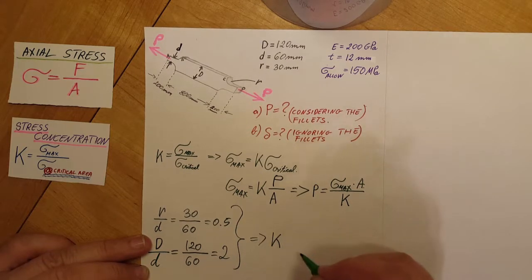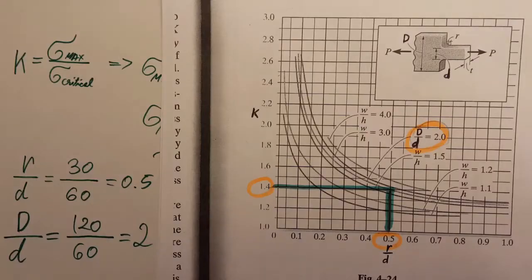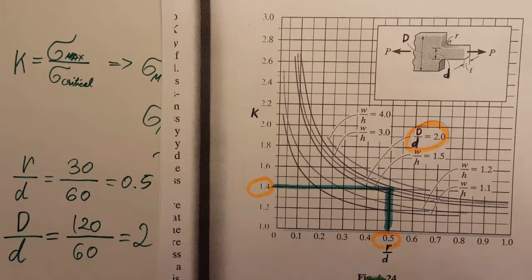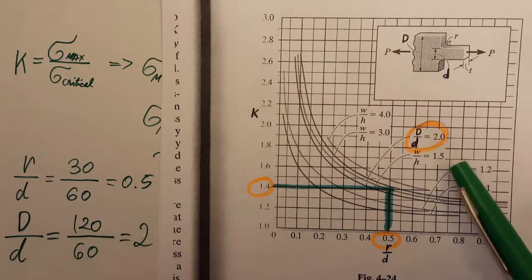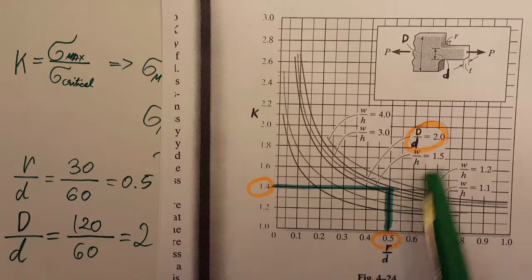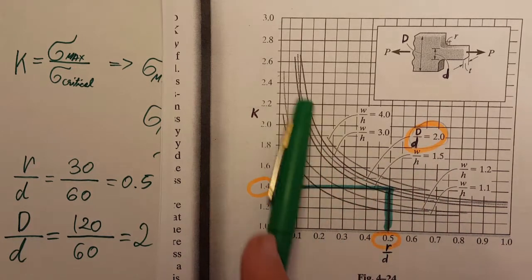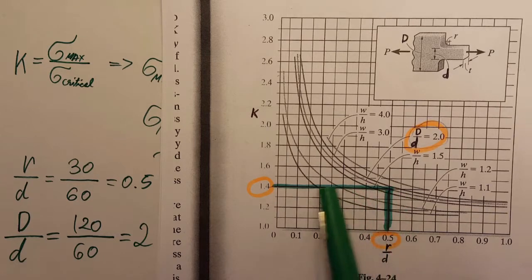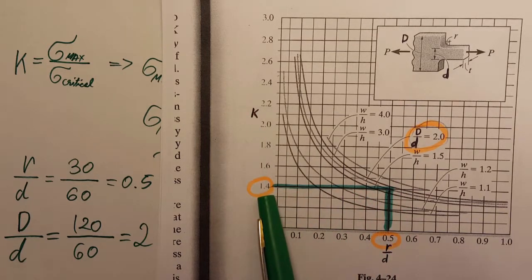Looking at the chart, we find r over d equals 0.5 along one axis, and big D over little d equals 2 along the other. From the intersection of these two values on the chart, we find our stress concentration factor K equals 1.4.